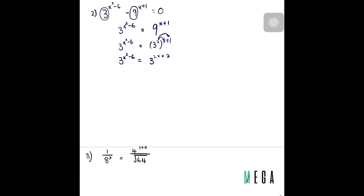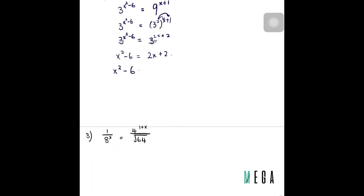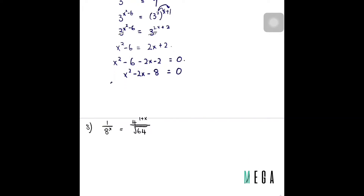Both sides now share the same base, so you can cancel the base and get x² − 6 = 2x + 2. Solving as a normal quadratic: x² − 2x − 8 = 0. Factorizing gives (x − 4)(x + 2) = 0, so x = 4 or x = −2. For this question there are two different solutions.